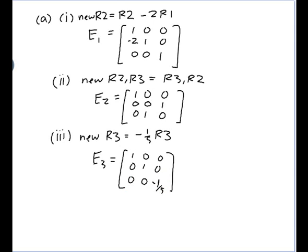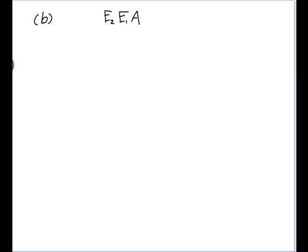Let's do part B. I need to find the matrix E which, when pre-multiplied onto A, performs all three row operations in order. To perform the row operations I multiply on the left. Starting with A, to do the first operation I multiply by E1 on the left, then E2 on the left, then E3 on the left. So E equals E3 times E2 times E1 — these three matrices multiplied together.